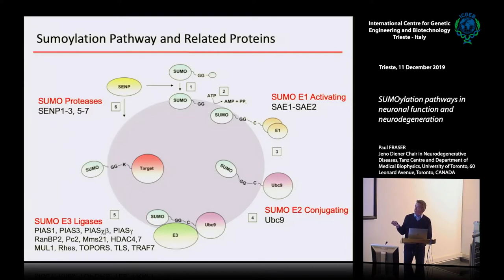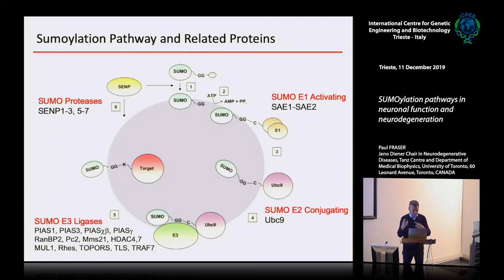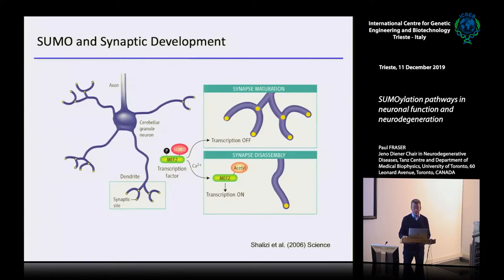Once a target is SUMOylated, it changes its function or solubility, and then it can be recycled again by the SENPs. People in neurodegeneration were really focused on ubiquitination, and SUMOylation really didn't have much airtime or function, particularly in neurons. It did in cancer, but in neurobiology almost nothing.